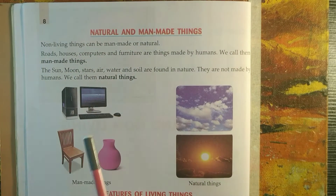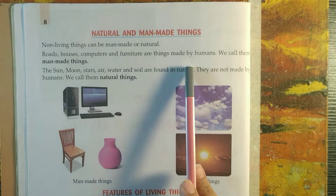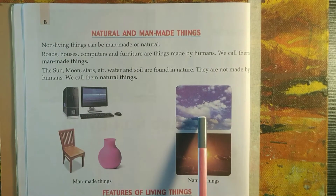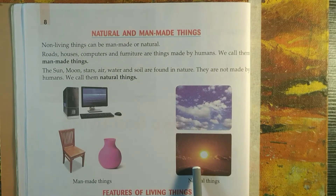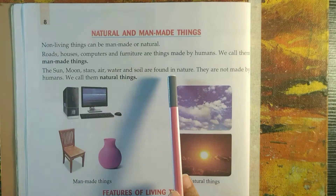Computer, chair, and vase are called man-made things because these things are made by humans. Things such as cloud, sun, moon, and stars are called natural things because they are naturally found in nature.